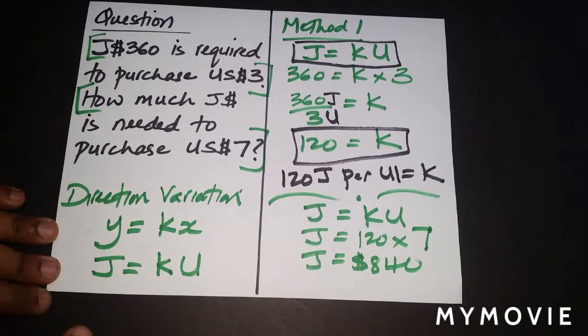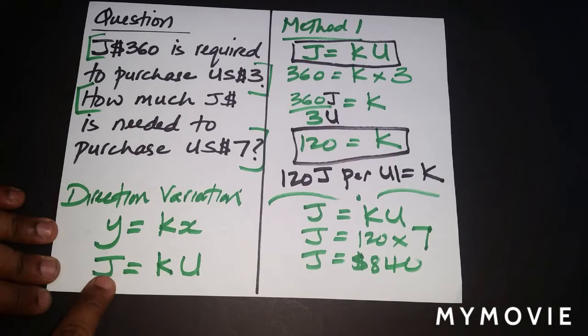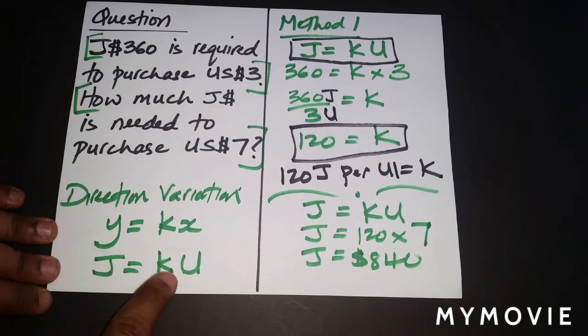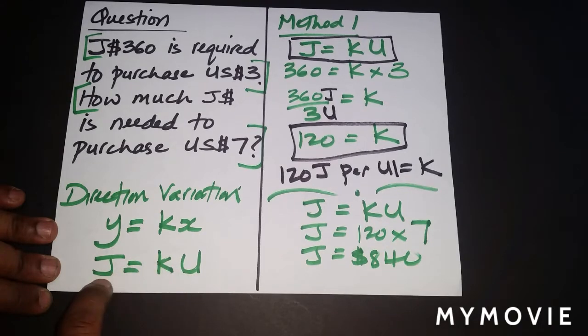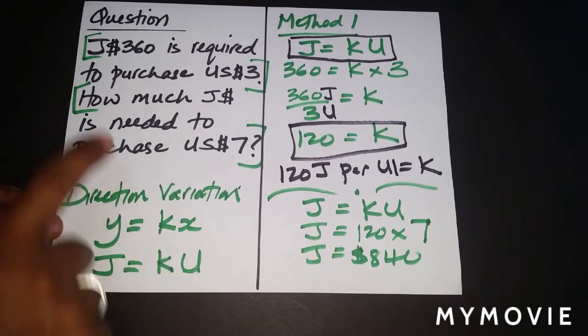Okay, we're going to take a look at Method 2. We're going to put U here and J here, because it really doesn't matter. The only thing it might influence is the actual value of K, but remember K is a constant of variation. So when you're in an exam situation and you know the question involves direct variation and you want to use this formula, you can adjust depending on the letters.